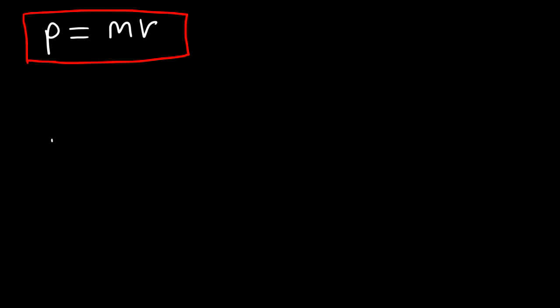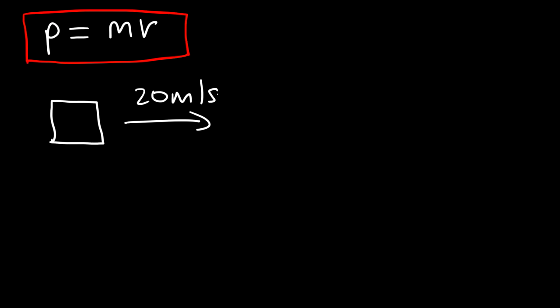I think of momentum as mass and motion. This block that's moving at a speed of 20 meters per second has momentum. A train moving at 15 miles per hour has a lot of momentum — it's moving fast and it has a lot of mass. So that's momentum: mass and motion.